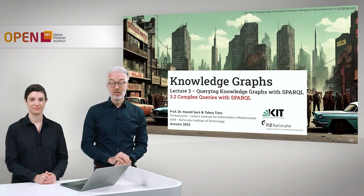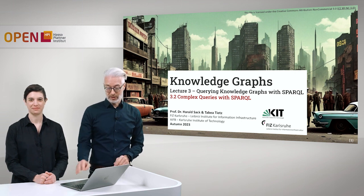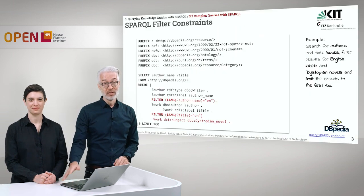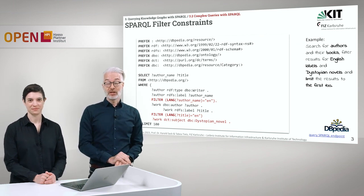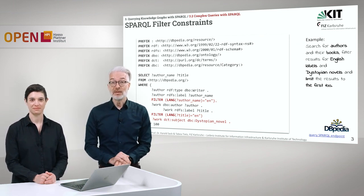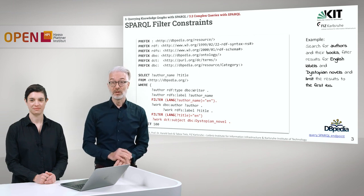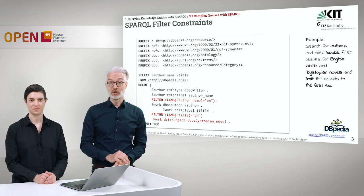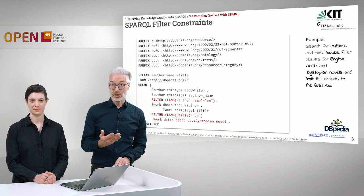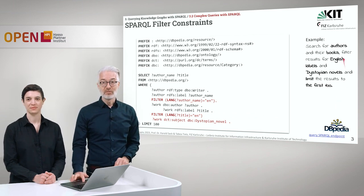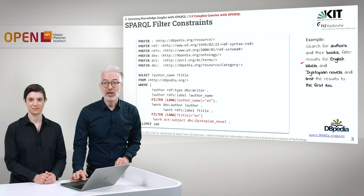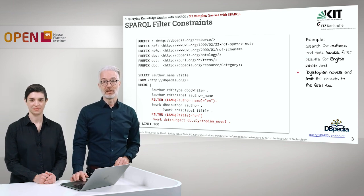Today we're going to show you complex queries with SPARQL. Just remember from the last section of the lecture, we were querying DBpedia and we were doing a filter constraint query. We were looking for authors and their books, filtering results for English labels and dystopian novels, and limiting the results to the first 100.